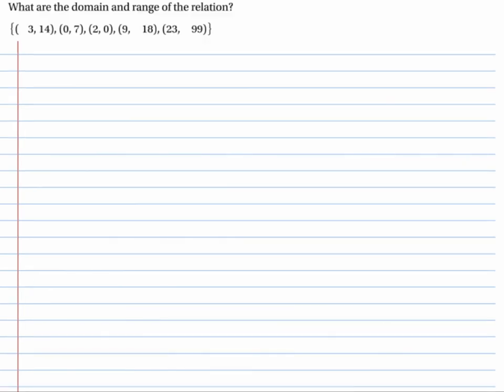So let's look at this problem. What are the domains and ranges of the relation? Well, to find the domain, I'm going to write the word domain, and then I'm going to record my x values. So it's 3, 0, 2, 9, and 23. This is the domain.